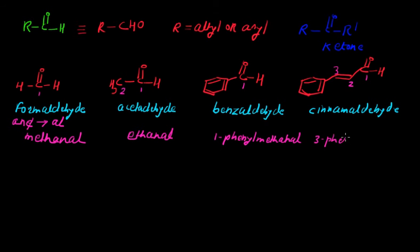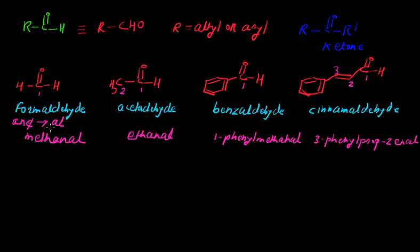For cinnamaldehyde, we number the carbons: 1, 2, and 3. At position 3 we have a phenyl group, so we write 3-phenyl. We have 3 carbon atoms, giving the prefix 'prop'. There is a carbon-carbon double bond at position 2, so this becomes prop-2-enal. The full IUPAC name is 3-phenylprop-2-enal.